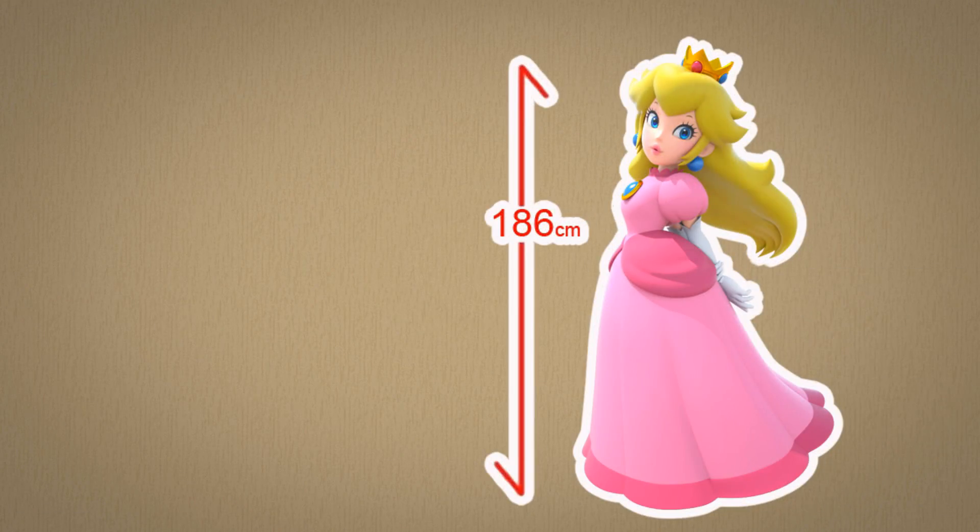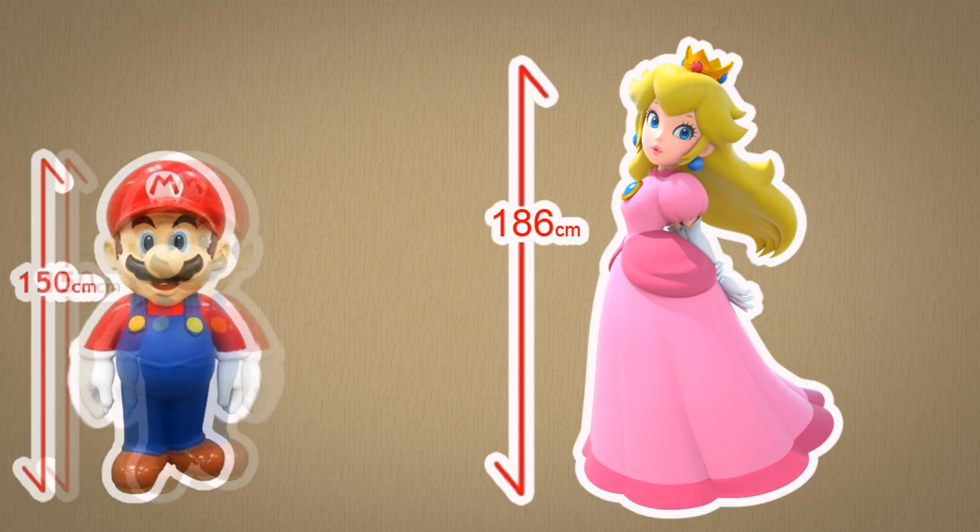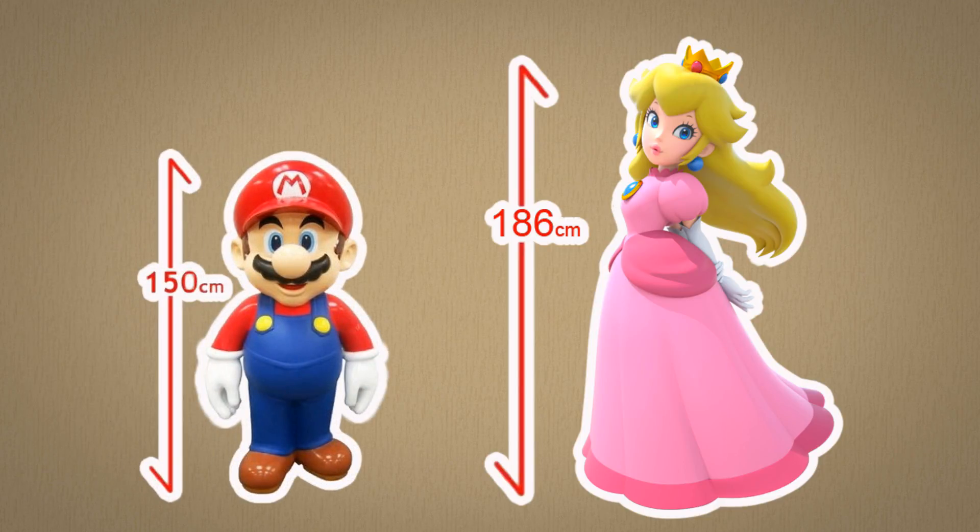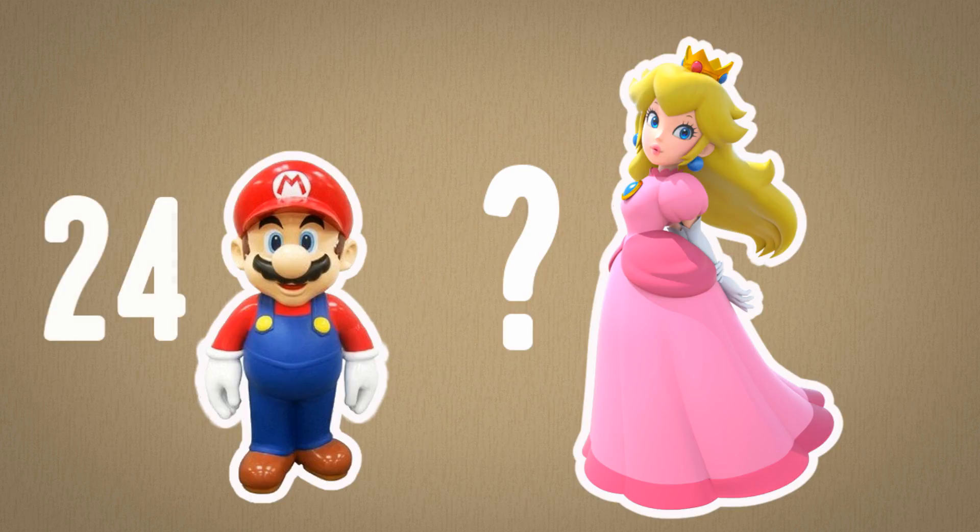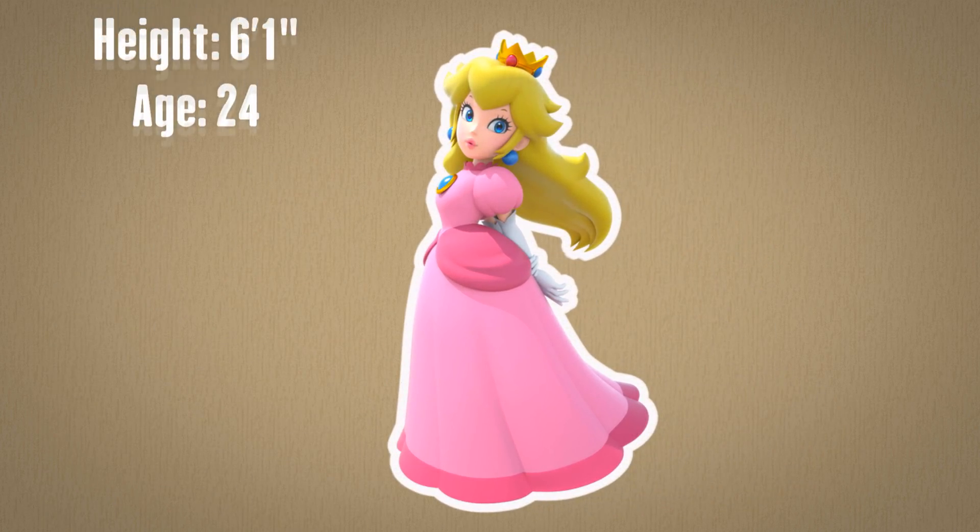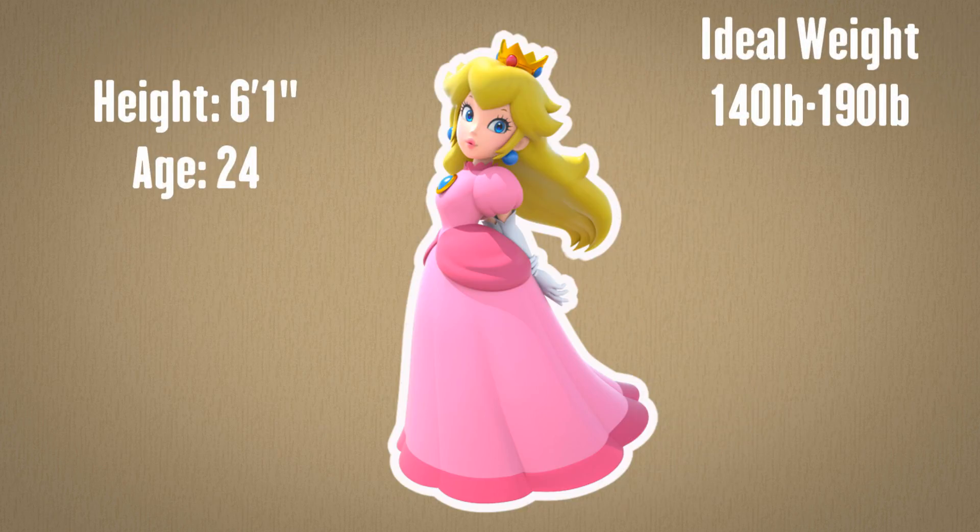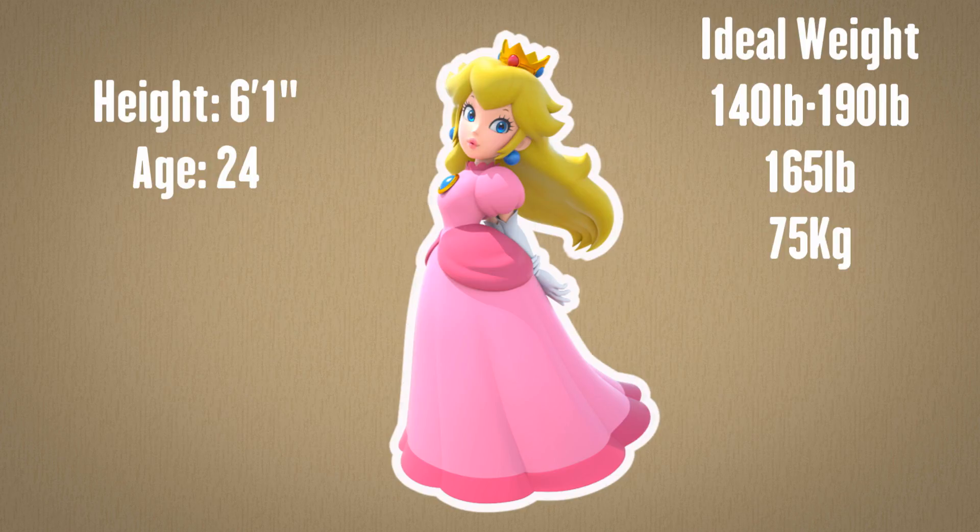Peach is 186cm, or 6'1", and Mario is 155cm, 5'1". So if we base the weight on a healthy person on their height and age, wait age, how old are these two? Well Miyamoto has revealed that Mario is in fact 24 years old, with Peach not far behind. Some estimate that she is 23, like Forbes, but let's just say we have two 24 year olds. Peach is 6'1", and 24. So her ideal healthy weight is between 140 and 190 pounds. Or for simplicity, we will go with 165 pounds, or 74.85 kilograms, or just, let's just go with 75 kilograms.